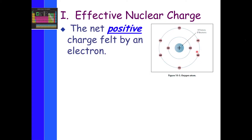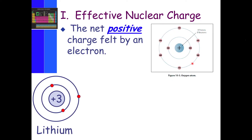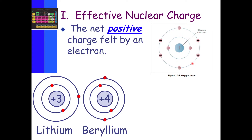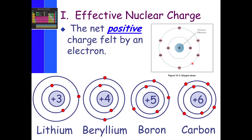Does it depend on the energy levels? Does it depend on how many electrons are on the outside? Well, it depends on all those things. With lithium, it experiences a positive charge of three — an effective nuclear charge of positive three. Beryllium has positive four, boron positive five, and carbon positive six. As we add more protons, the electrons are going to feel more tightly bound to the nucleus. If you add more protons, you also add more electrons, and the electrons will attract to the nucleus more.